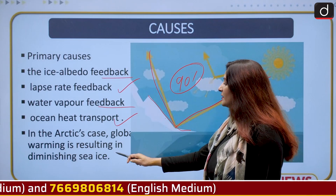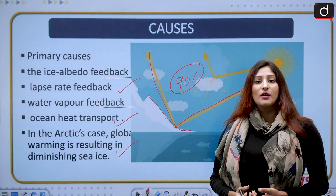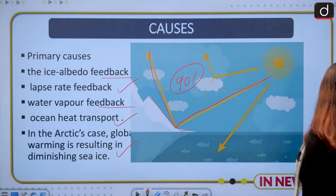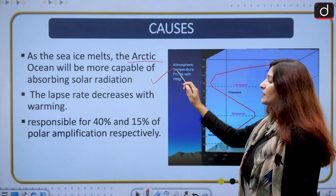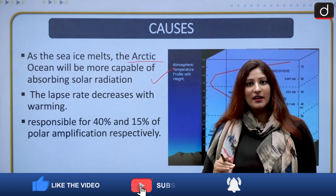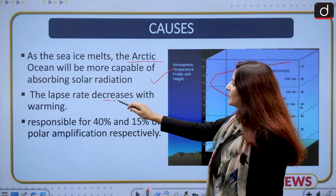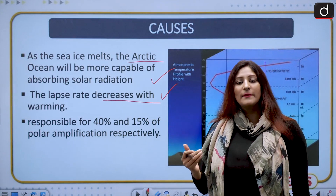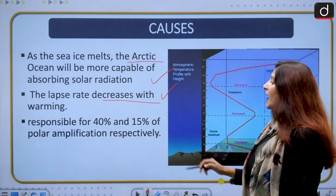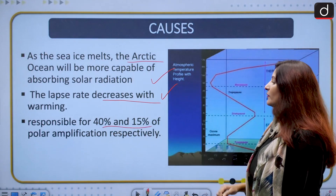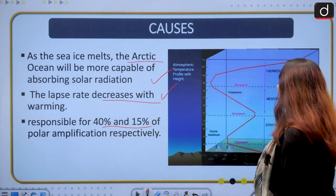In the Arctic case, global warming results in diminished sea ice as glaciers absorb so much heat they melt and sea level rises. As sea ice melts, the Arctic Ocean becomes more capable of absorbing solar radiation because there is less ice to provide the albedo effect — causing more glacial melting. The lapse rate decreases with warming and is responsible for 40% and 15% of polar amplification respectively.